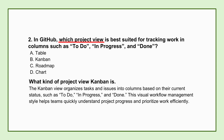That would definitely be the Kanban board view. It's incredibly powerful because it visually organizes tasks into columns, where each column represents a different stage of your workflow. And it's not just about seeing what's happening — it's about making progress totally transparent to everyone. You can immediately spot bottlenecks, and it fosters a shared understanding of the project's health.